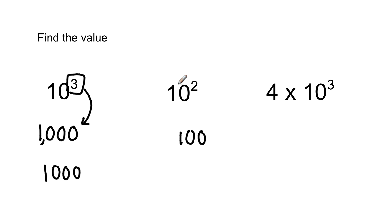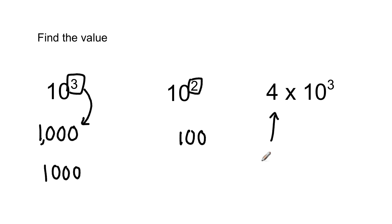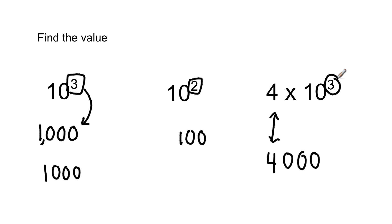The trick is you take the one, and then the exponent tells you how many zeros to put on it. Now, what do you do with something like 4 times 10 to the third power? Well, if you already know that 10 to the third power equals 1,000, it's just 4 times 1,000. Another way to look at it: write the four, and then take the zeros from 10 to the third power and write them on the end of the number. So you can either say 10 to the third power is 1,000 and 4 times 1,000 is 4,000, or the exponent is 3, meaning three zeros — write three zeros on the end of the 4. There are a couple of different ways of figuring those things out.